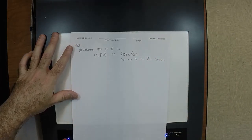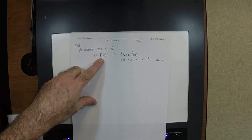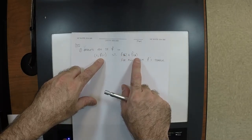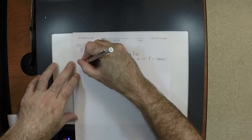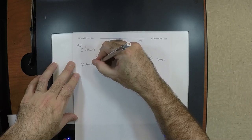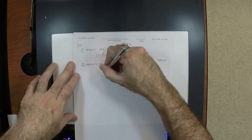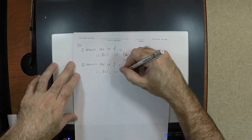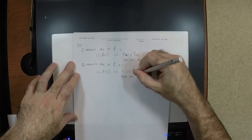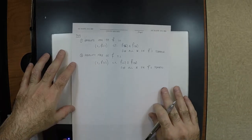The absolute minimum is the lowest point — f(c) is less than or equal to every other output. The absolute maximum of f is a point (c, f(c)) such that f(c) ≥ f(x) for all x in f's domain. Let's have an example.